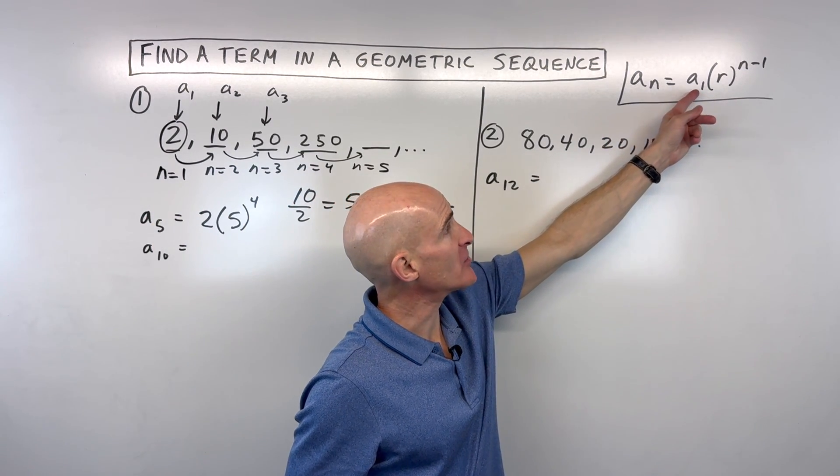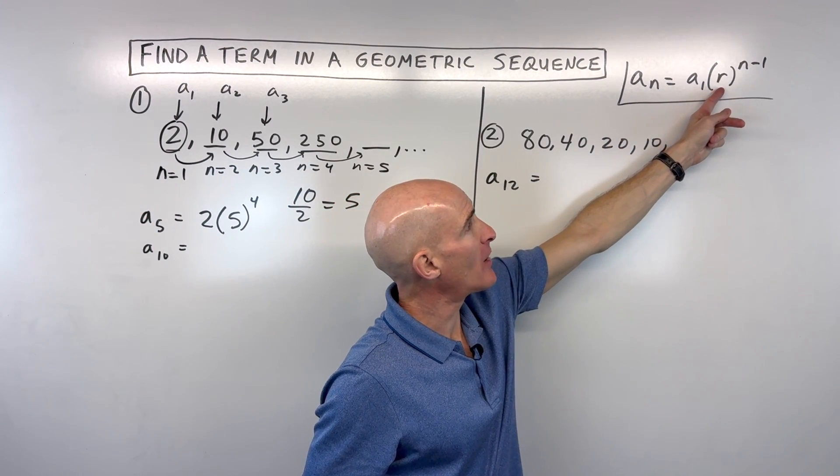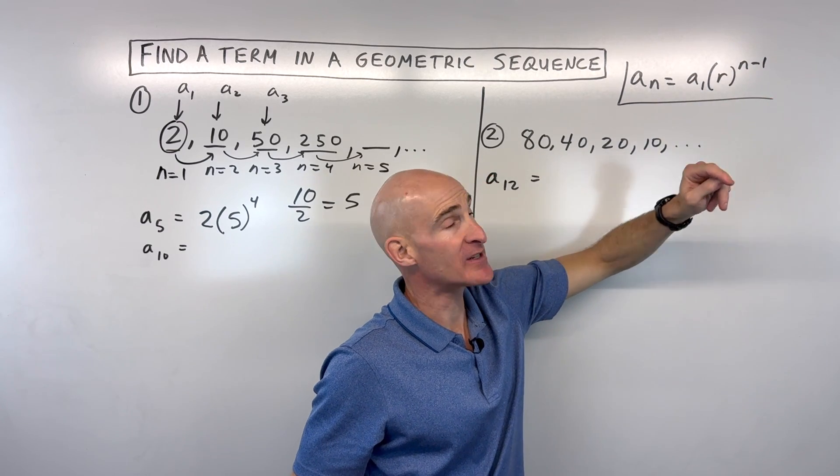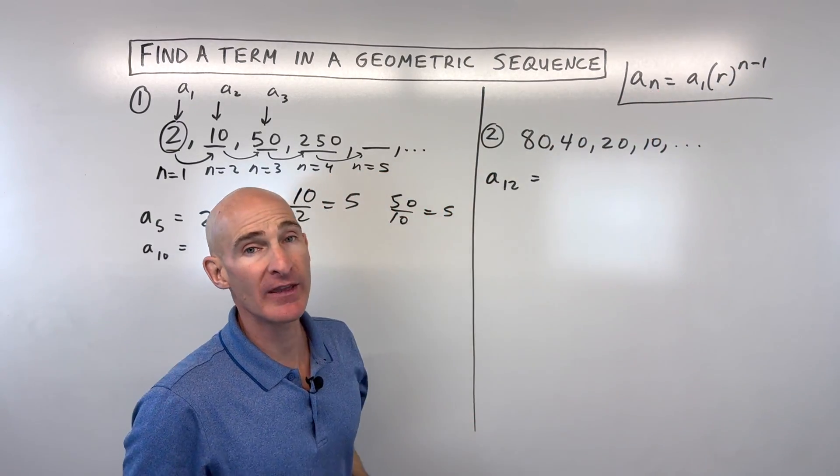So that's where this formula here comes into play. You start at the first term, you multiply by the ratio, n minus 1 times. So that's to the n minus 1 power. And that'll give you the value of the nth term.